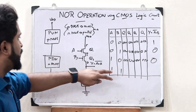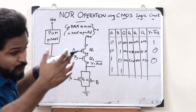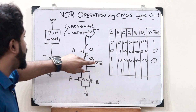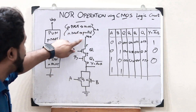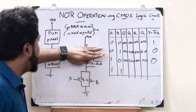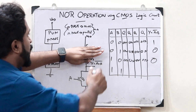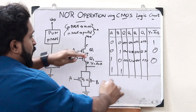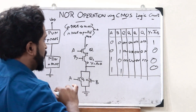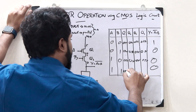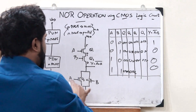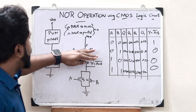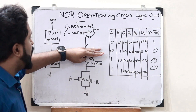Finally, let us take the case when both A and B are 1. Both Q1 and Q2 are off, so nothing flows through the pull-up network at all — it is completely broken. Q3 and Q4 in the pull-down network are both on, but it doesn't matter because the circuit is broken in the pull-up section. Therefore, the output Y is equal to 0.